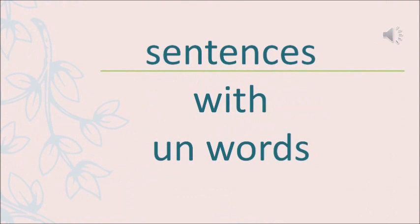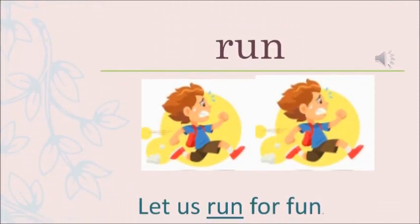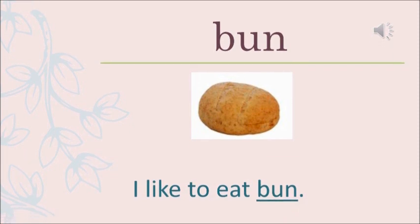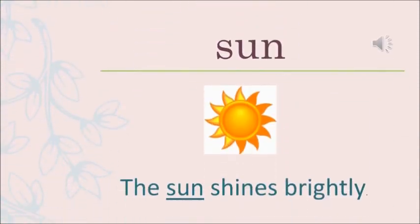Now let's see a few sentences with the un words. The first word is run — the sentence is: let us run for fun. The child here is running for fun. Now the next word is bun — the sentence is: I like to eat bun. Now the next word is sun — the sentence is: the sun shines brightly.